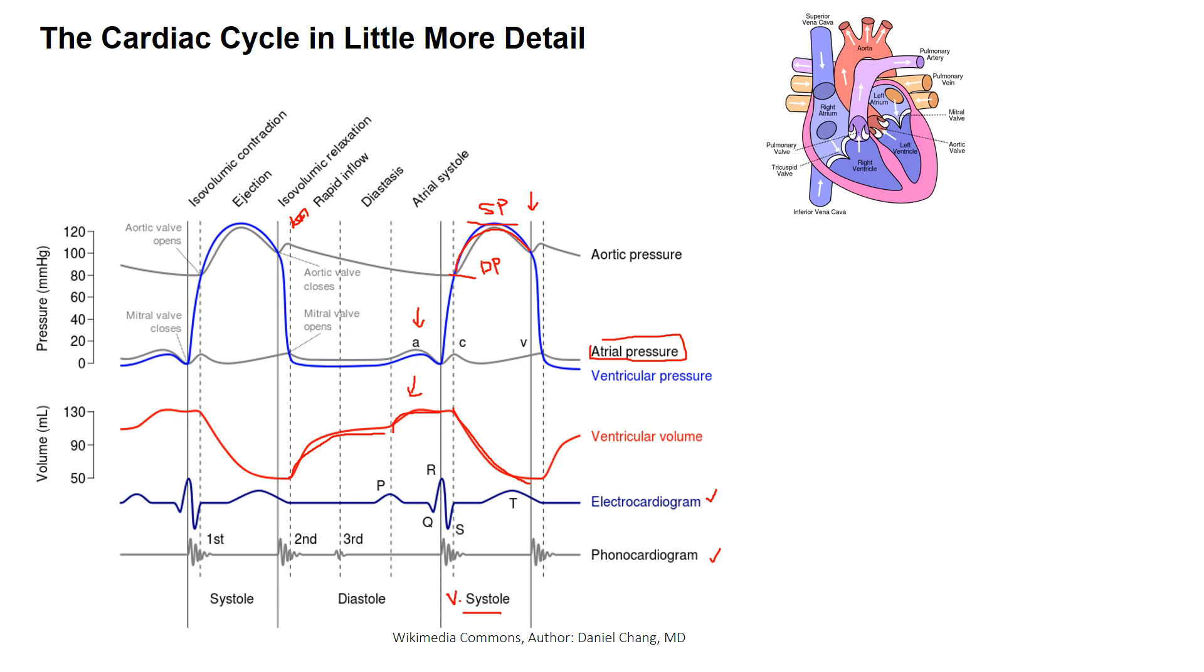We can use this diagram to introduce an important concept called ejection fraction. What do you think ejection fraction means? Ejection fraction is the fraction of the end diastolic blood volume that is ejected from the ventricle in systole. Here at the end of diastole, there's about 130 milliliters in the ventricle. How much is ejected? 130 minus 50 is about 80 milliliters. So the ejection fraction is 80 divided by 130, about 62%. That's a perfectly healthy ejection fraction.